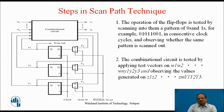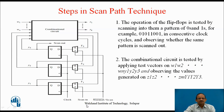The testing method consists of the following steps. First, the operation of the flip-flops is tested by scanning into them a pattern of zeros and ones — for example, 0, 1, 0, 1, 1, 0, 0, 1 — in consecutive clock cycles, and observing whether the same pattern is scanned out. For this, the Normal/Scan signal is kept to 1, and the input pattern is applied on the scan input.